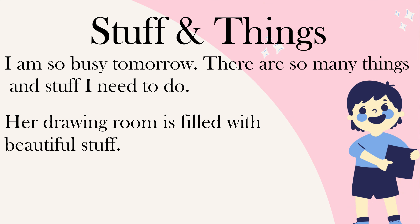Two more overused crutch words are 'stuff' and 'things.' If used too frequently, they seem vague. People say: 'There are so many things and stuff I need to do' or 'Her drawing room is filled with beautiful stuff.' Instead, say 'Her drawing room is filled with beautiful decoration pieces.' 'The research indicates many things' — what things? Maybe he means discoveries, details, findings, or suggestions. Stuff and things are vague — replace them with suitable words.